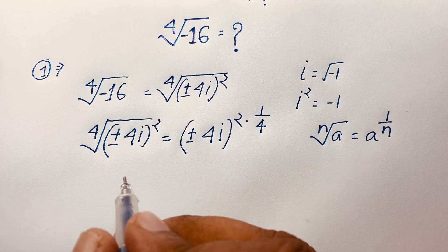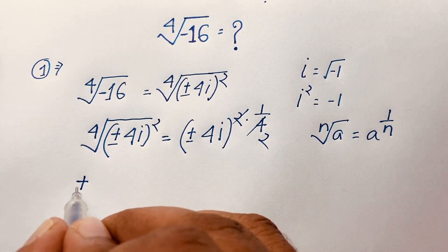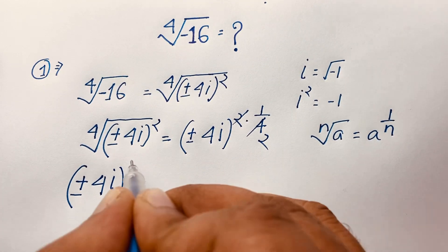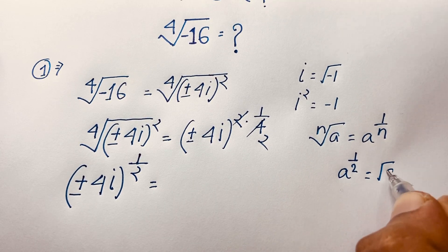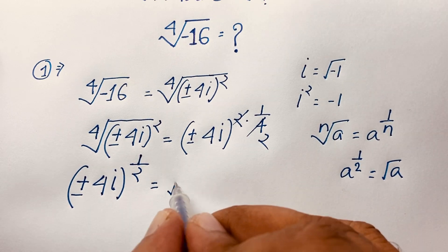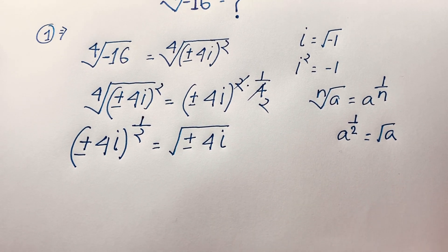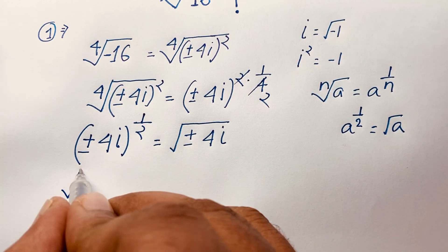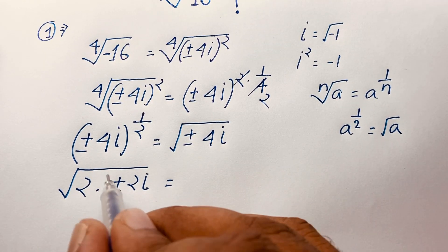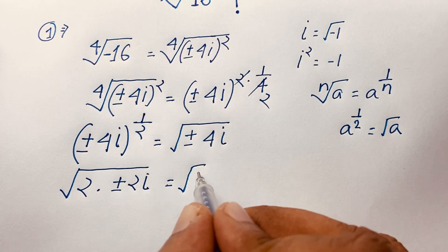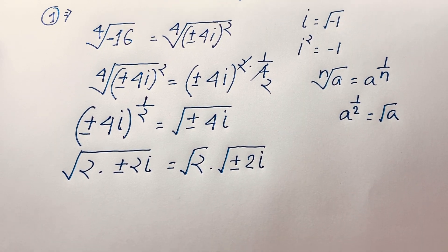The 4 divides into 2, giving us (±4i) to the power 1/2. Since a to the power 1/2 equals √a, we get √(±4i). Now I evaluate this expression: √(±4i) equals √2 times √(±2i).